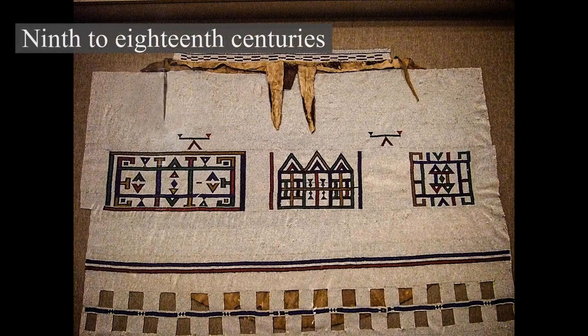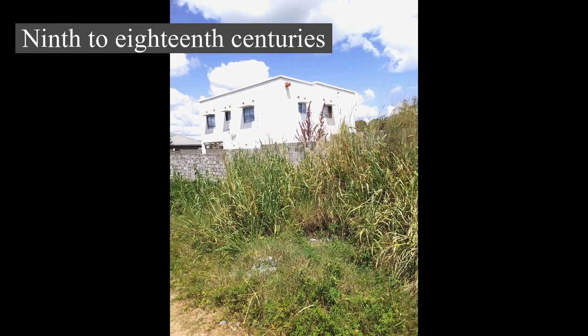9th to 18th centuries: Pre-colonial Africa possessed perhaps as many as 10,000 different states and polities characterized by many different sorts of political organization and rule. These included small family groups of hunter-gatherers such as the San people of Southern Africa, larger, more structured groups such as the family clan groupings of the Bantu-speaking peoples of Central, Southern, and Eastern Africa.